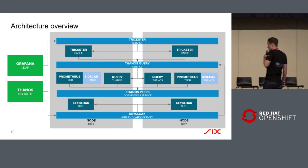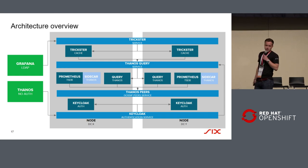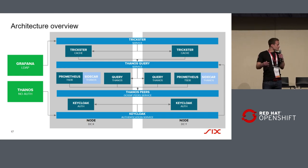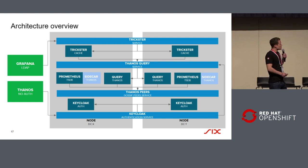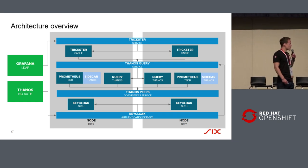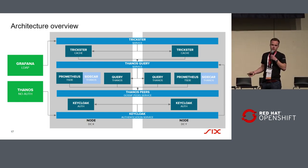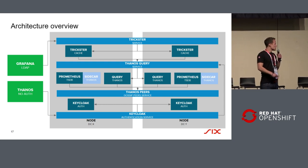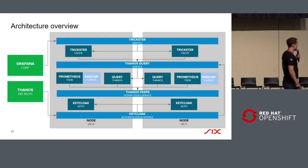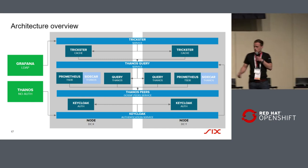We also gave our customers the possibility to access the data not only through Grafana but also directly on Thanos. We had the challenge that Thanos and Prometheus don't have an authentication layer, so we put Keycloak in front of it so that everything is authenticated in the end.